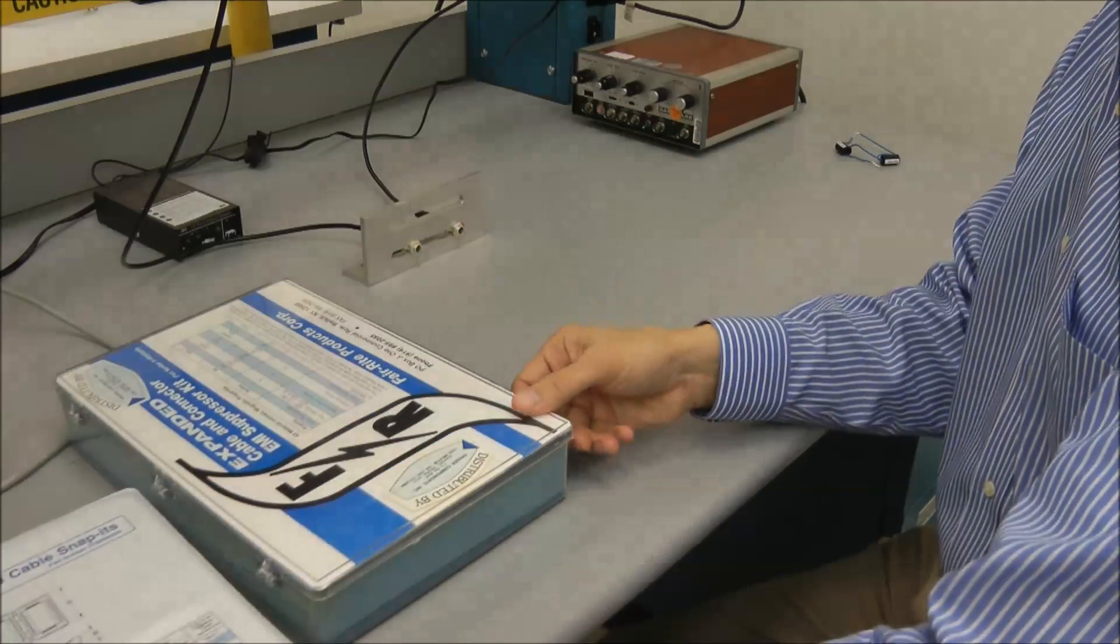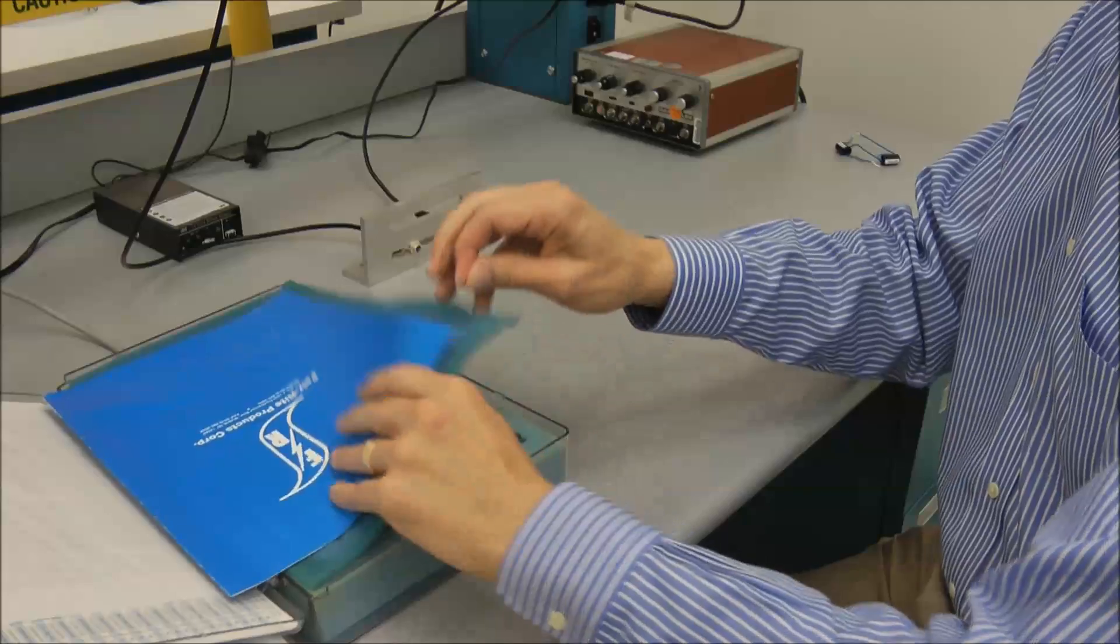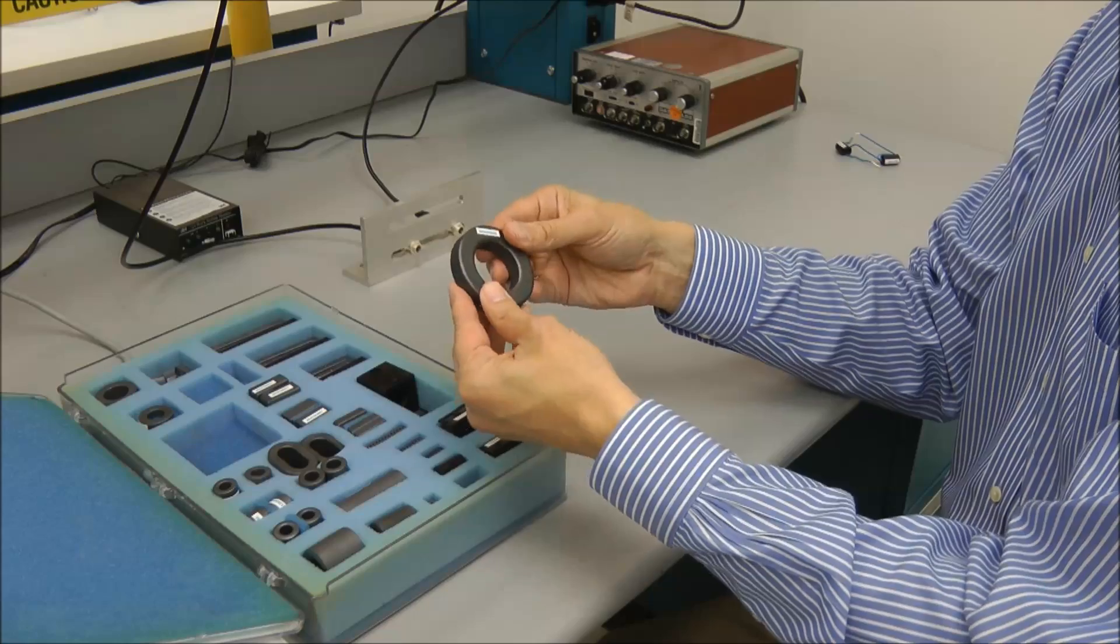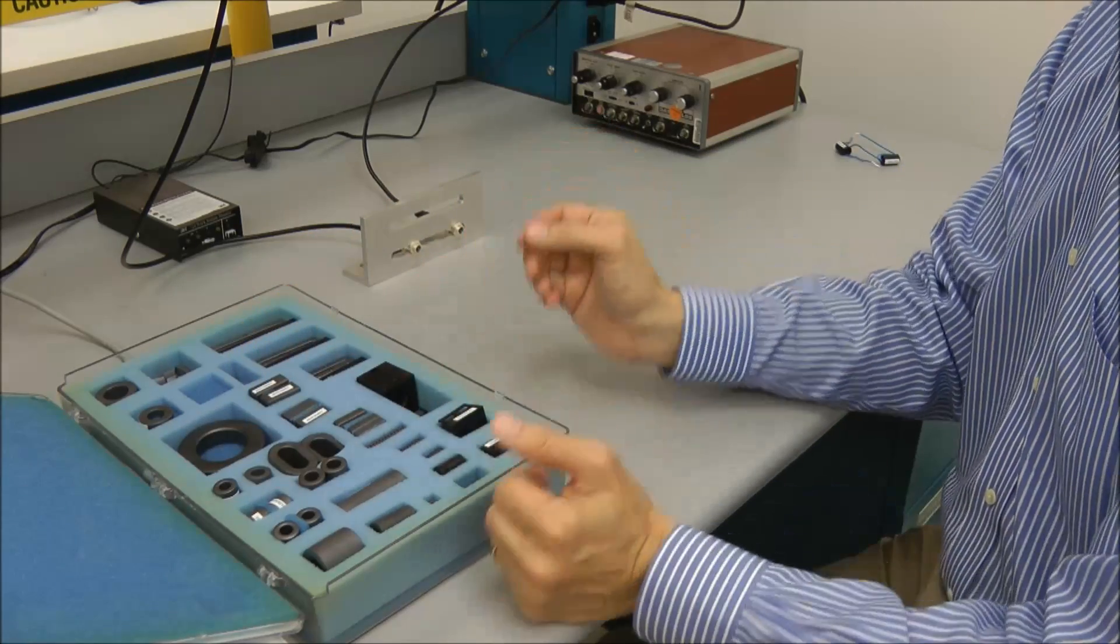So again, there's many different types of materials, many different sizes of ferrites. Some of them are not clip-on. Some of them are like solid rings here, like this, and you'd slide the cable through them. And others come apart and then clip on around the cable.